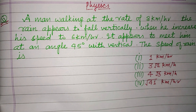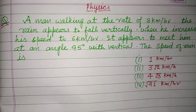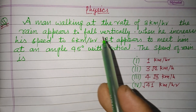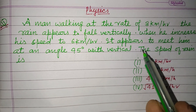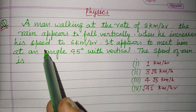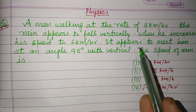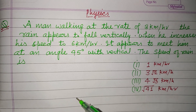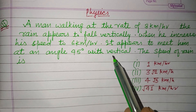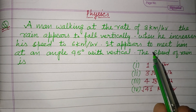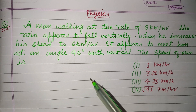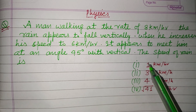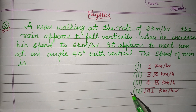Hello viewers, warm welcome to this YouTube channel. The question is: a man walking at a rate of 3 km per hour, the rain appeared to fall vertically. When he increases his speed to 6 km per hour, it appeared to meet him at an angle of 45 degrees with the vertical. The speed of rain is?